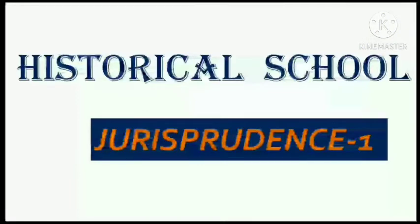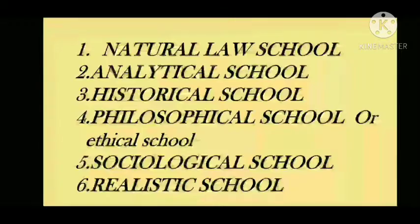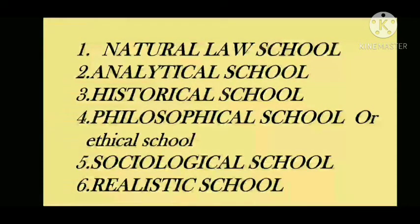In earlier videos, we had covered the natural law school and analytical school — you can click on the i-button for those. Basically, there are 5 schools in jurisprudence: natural law school, analytical school, historical school, philosophical school (which we also call ethical school), and sociological school.